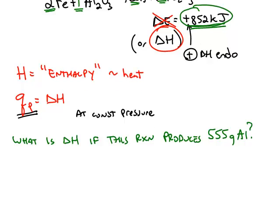So for example, if we calculate delta H for a reaction that produces 555 grams of aluminum, we're trying to figure out how many kilojoules of heat would be absorbed if the reaction produced 555 grams of aluminum.